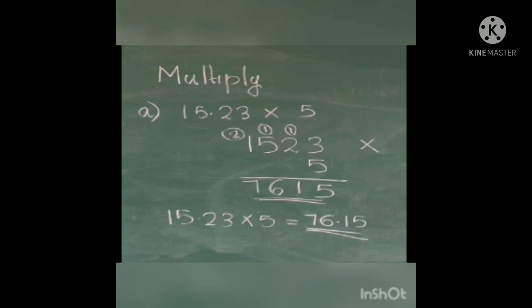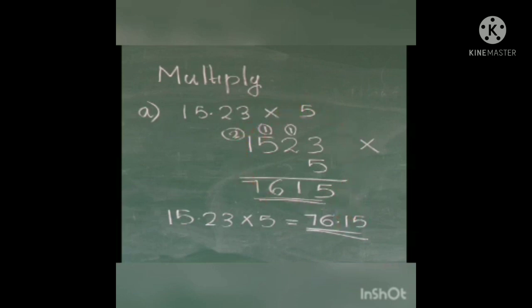Don't forget to insert the decimal point after multiplication. While multiplying, we avoid the decimal point. After getting the product, you insert the decimal point by counting from the unit place — taking the correct number of decimal places from the question. So counting 2 places from the unit place in 7615 gives us 76.15.